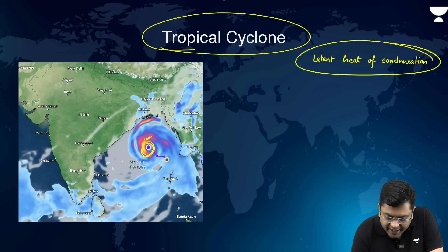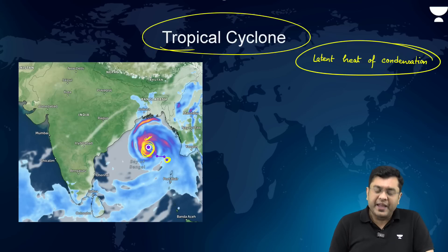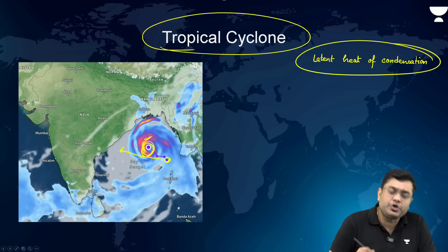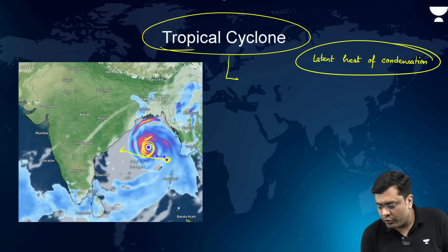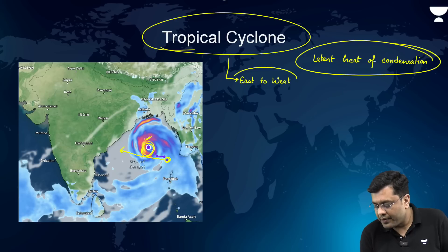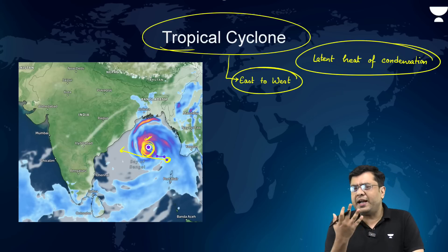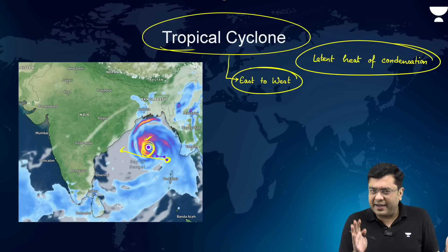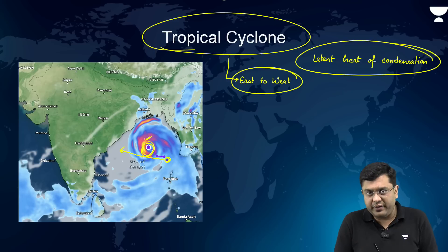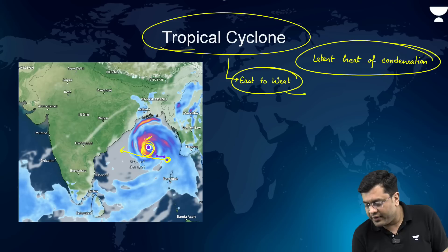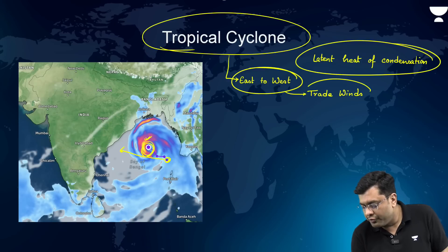The low pressure system started forming and then moved from east to west. That is the case with most tropical cyclones — they travel in a direction from east to west. The reason is simple: this cloud formation and cyclonic development get influenced by surface winds. Within the tropics we have the trade winds, and the general direction of trade winds is from east to west, which is why tropical cyclones also tend to move from east to west.